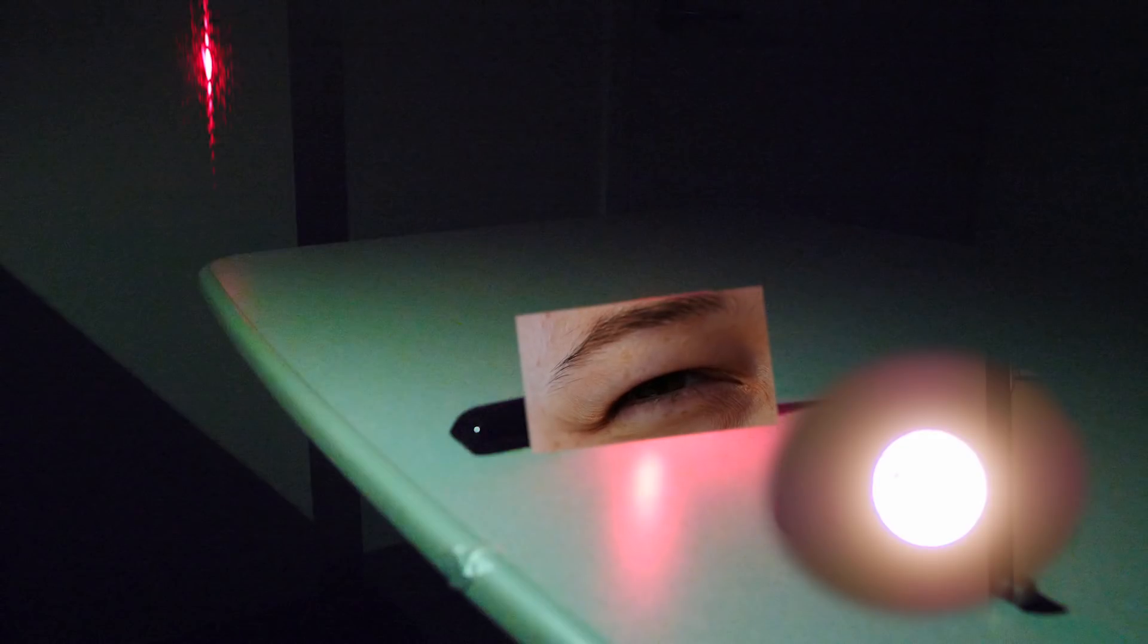When you squint at the lamp, the lamp acts like the laser, your eyelids act like the slit, and your retina, the group of light-sensitive cells at the back of your eye, act like the wall.